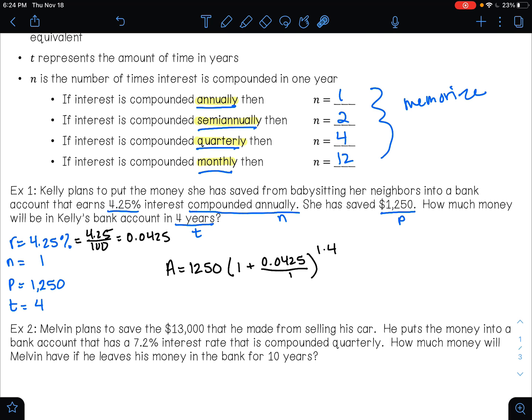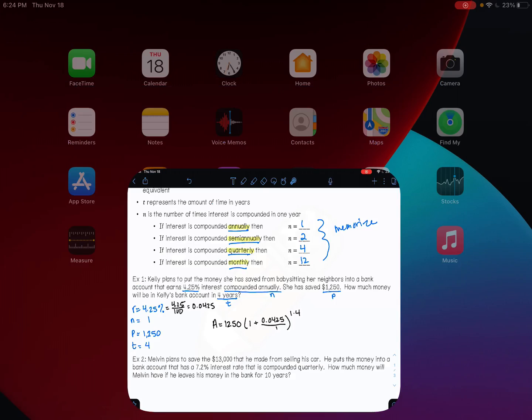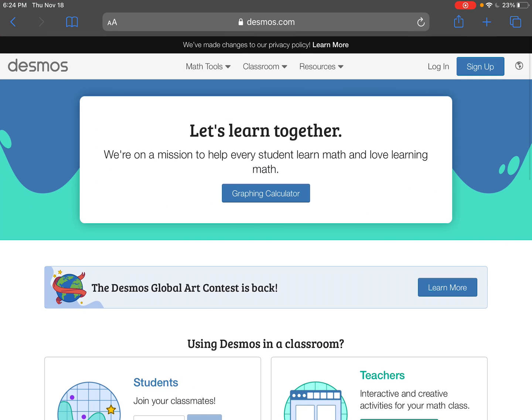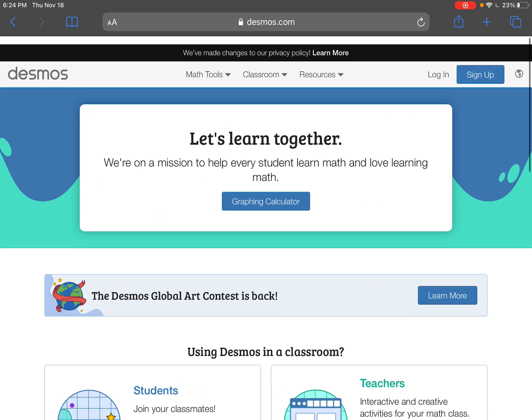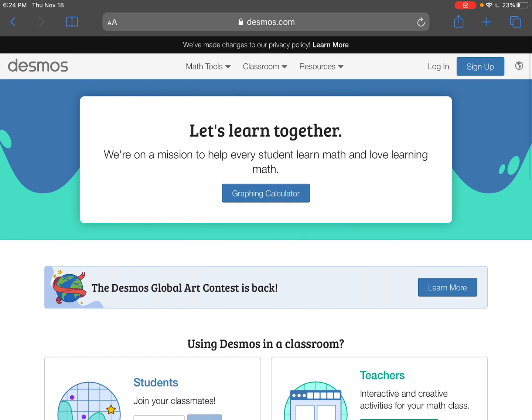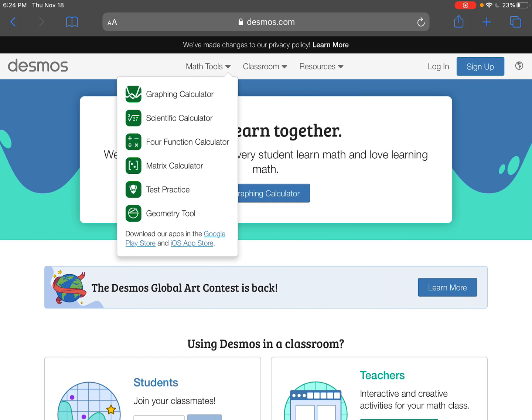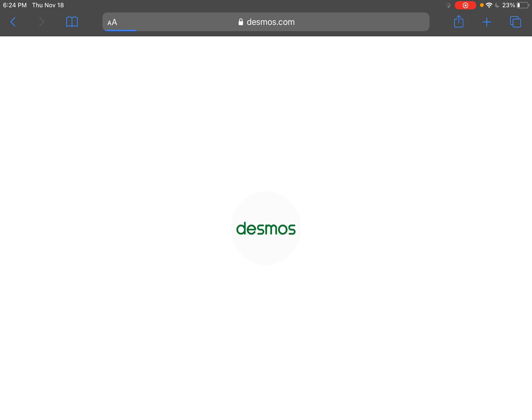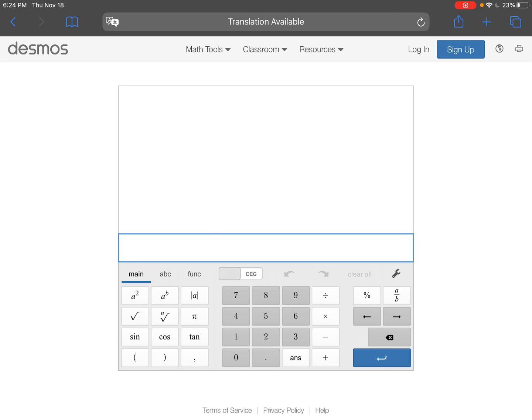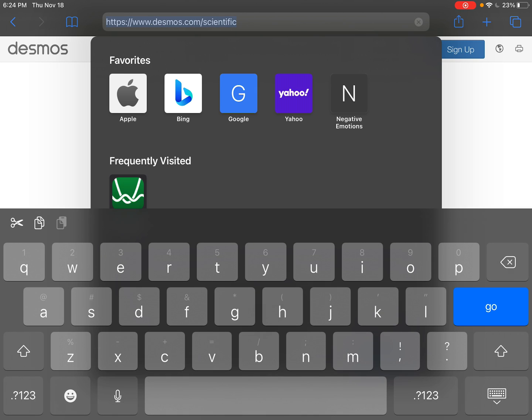We're going to head on over to Desmos, my favorite calculator of all time. I'm here at Desmos. I do not want the graphing calculator. Instead, I'm going to go to math tools up here on the top left hand side. And I'm going to click on the scientific calculator. You can also get here by going to desmos.com/scientific. That will take you here as well.